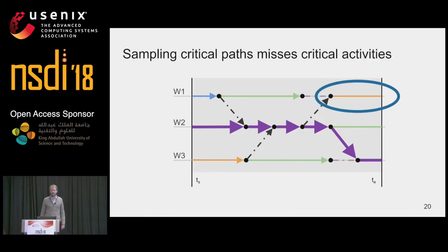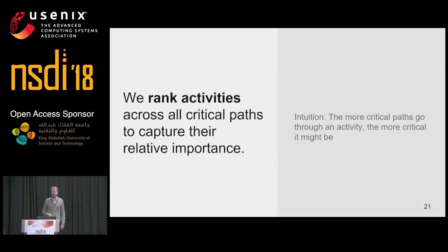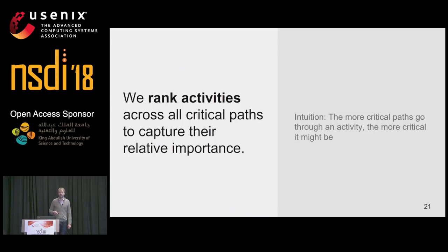Let's try sampling. Here we selected a random critical path that goes from worker two to worker three. However, it misses critical activities, so sampling wouldn't give the same accuracy as seeing all critical paths in a window. But we are not really interested in the critical paths themselves — we are only interested in the information they provide. What we want to do is rank activities across all critical paths to capture their relative importance. The intuition is that the more critical paths that go through an activity, the more critical it might be.